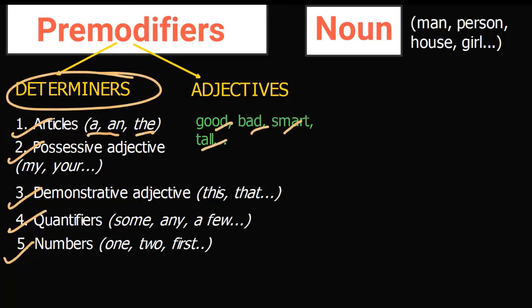'Frustrated with the unfair treatment, Alex left the company' — 'frustrated with the unfair treatment' starts with past participle 'frustrated', identifies Alex, and also works as the reason why he left. This is the most concise way to express: 'Because he was frustrated with the unfair treatment, Alex left the company.' So a past participle phrase can identify a noun and work as an adverb giving the reason for the main action.